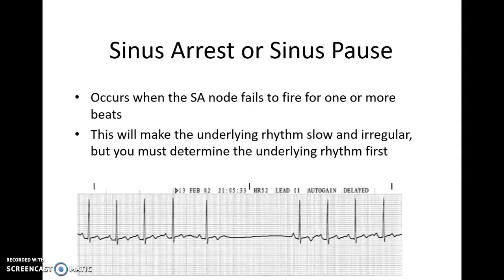The last section we'll talk about for sinus rhythms is a sinus arrest or a sinus pause. A sinus arrest or sinus pause basically means that the SA node has failed to fire for one or more beats. This is going to make the underlying rhythm a little bit slower and irregular. Unlike sinus arrhythmia where something is speeding up and slowing down, with sinus arrest the SA node is just failing to fire for one or more beats.